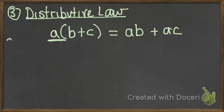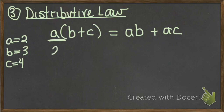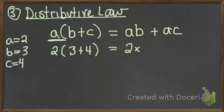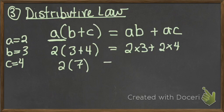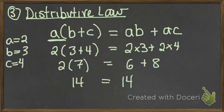Just like before, let a equal 2, b equal 3, and c equal 4. So instead we have 2 times (3 plus 4) equals 2 times 3 plus 2 times 4. The left side is 2 times 7, and the right side is 6 plus 8. Both equal 14, so it checks out. To help you remember, I'm literally distributing the A to both my B and my C — distributing the A inside the brackets.